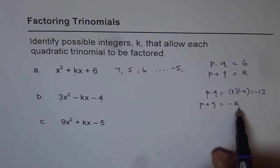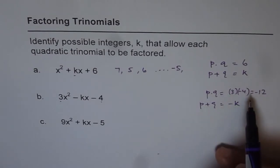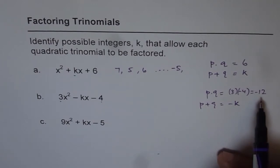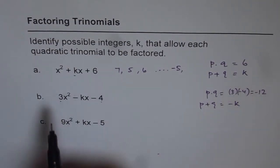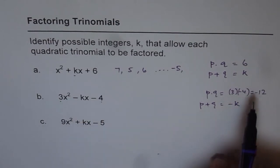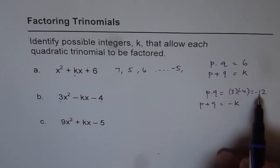So all those possible values will be the values for k. Now we are looking for sum of minus 12. So when you multiply this, you get minus 12. So what we are looking for here, any two numbers which can give us minus 12. So for example, plus 6 and minus 2.